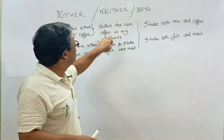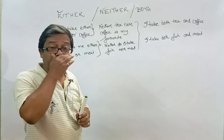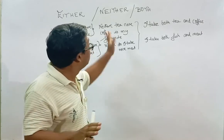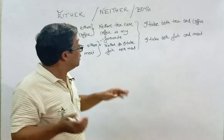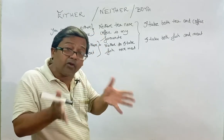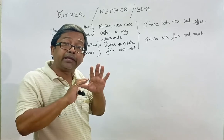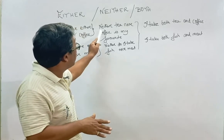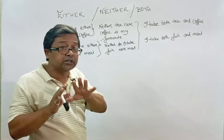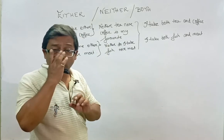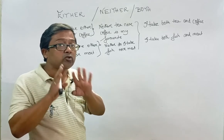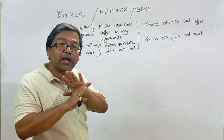Neither tea nor coffee is my favorite drink. So two things, and I don't like either tea or coffee. Neither is used for two things when you don't want any of them or don't like any of them. Neither tea nor coffee is my favorite. The difference: either — two things, you have a choice to take one. Neither — two things in front of you, and you don't like any of them.